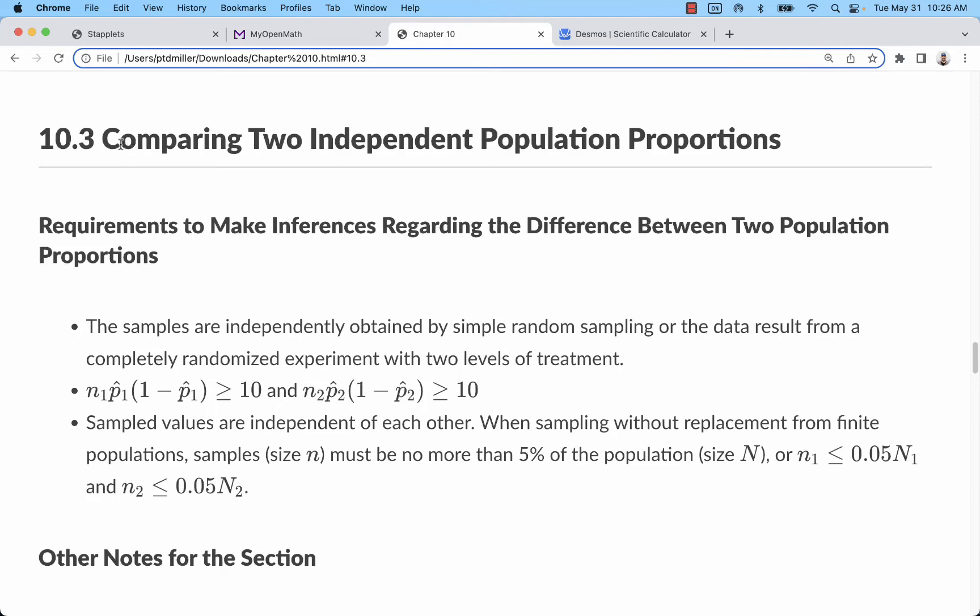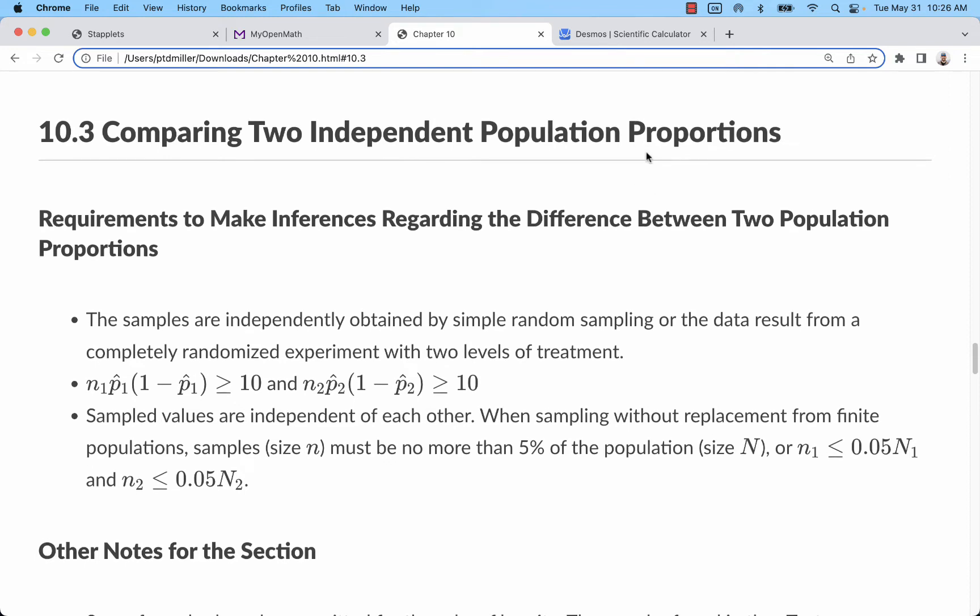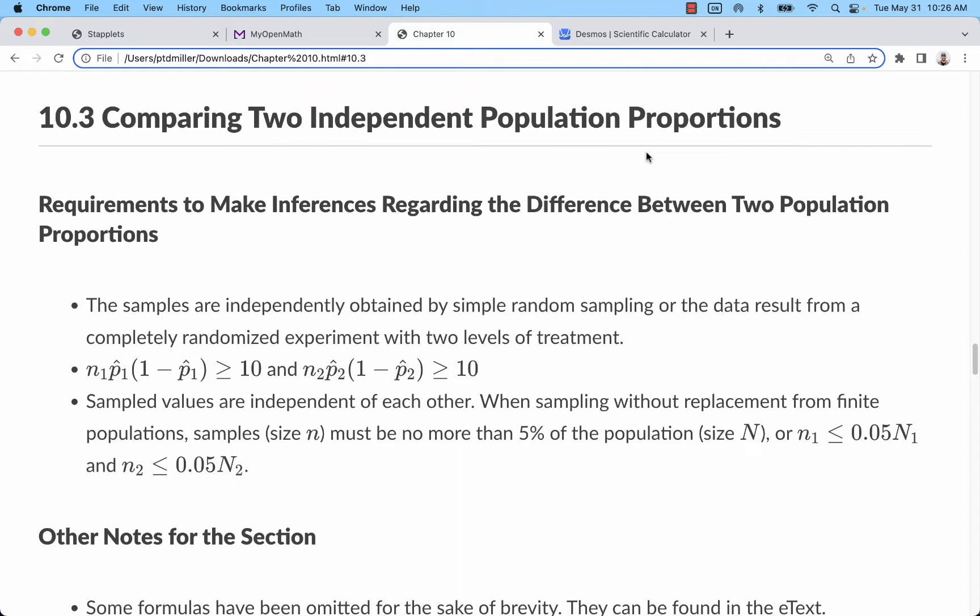We've done comparisons of two independent population means. Now we're going to look at proportions. These kind of problems compare the percent of two different groups that meet the same criteria.